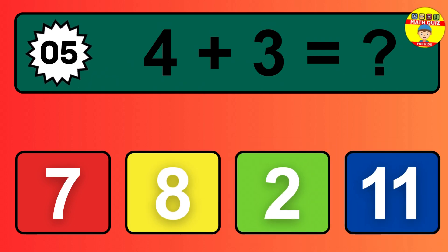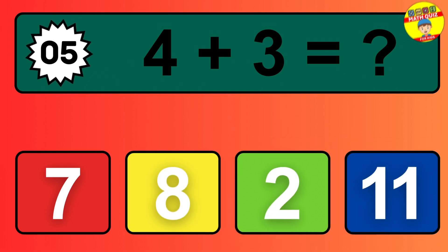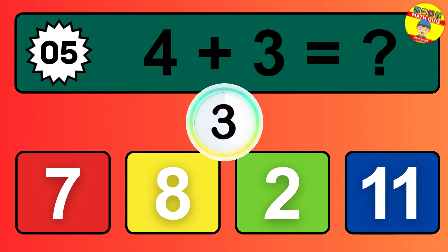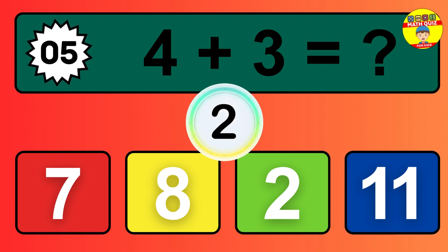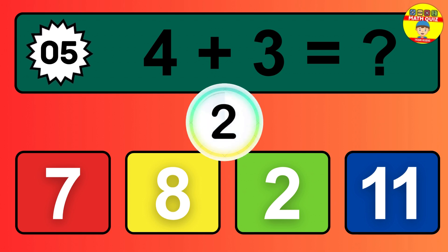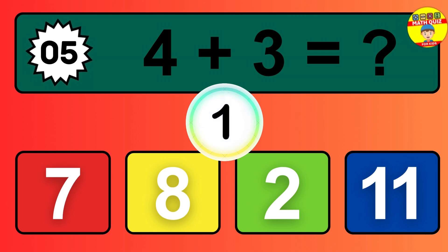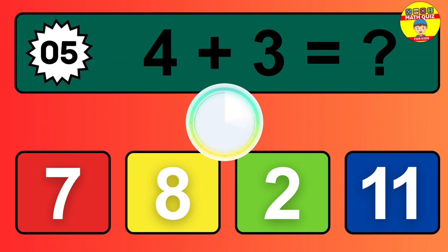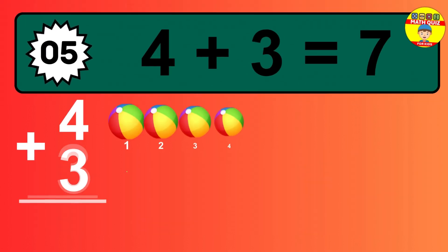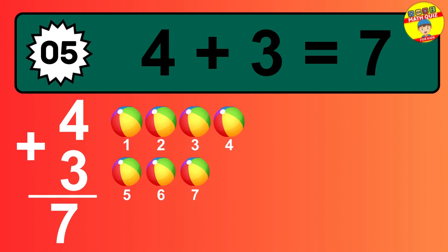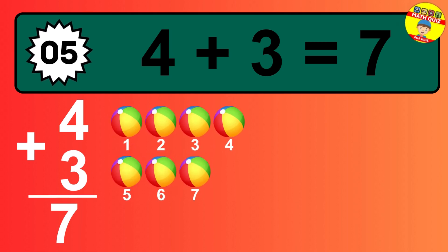Question 5. 4 plus 3 equals what? The answer is 4 plus 3 is 7.